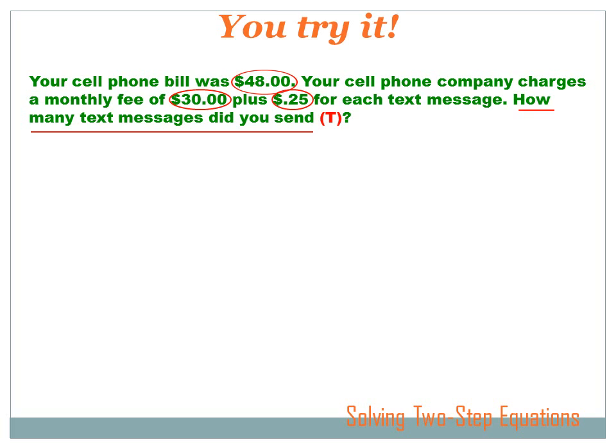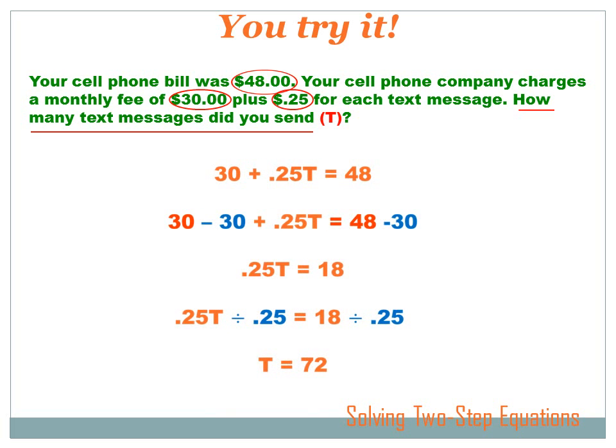So now we know that the company charges you a fee each month that equals $30 plus 25 cents for each text message that you make. Or $30 plus 25 cents times the number of text messages you sent. So we can write that just this way. The fee is $30 plus 25 cents times each text message that you make. And we know that in this particular month your charge was $48. So we've now got an algebraic expression. 30 plus .25 T equals 48.